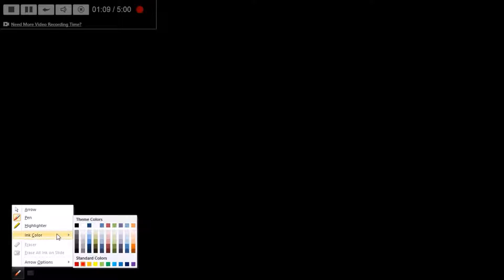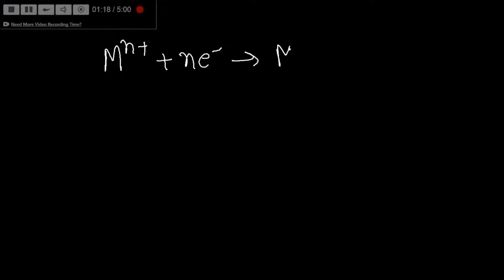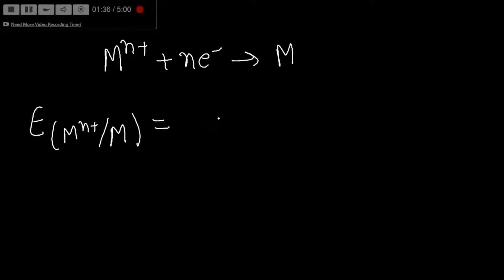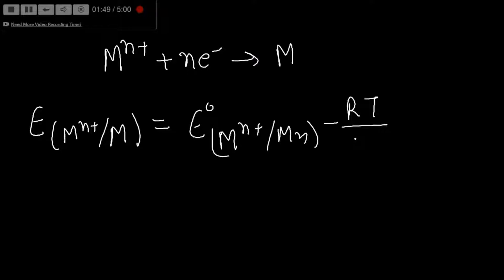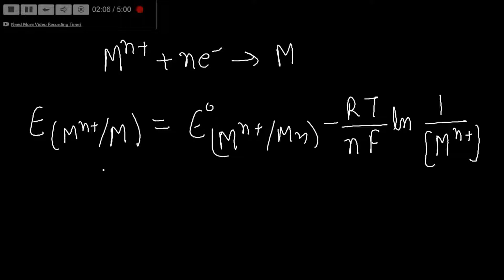So, for the reaction where M^(n+) takes n electrons and gets converted into M, the Nernst equation gives the actual reduction potential of this electrode as: E = E° minus (RT / nF) times ln(1 / [M^(n+)]). Here R is the gas constant, T is temperature, n is the number of electrons involved, and F is one Faraday of charge. This is the Nernst equation.